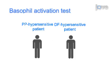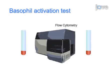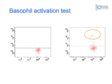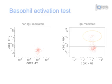Next, the well-characterized drug conjugates are used to stimulate basophils of drug hypersensitive donors. Ultimately, the basophil activation test, or BAT, can be used to evaluate IgE-mediated mechanisms in drug hypersensitivity.